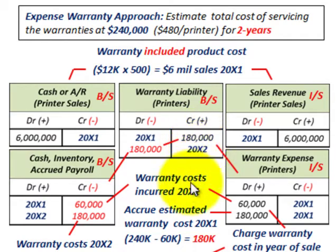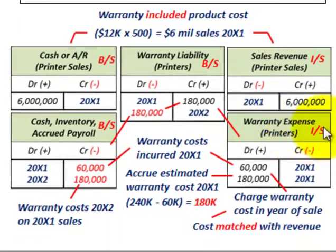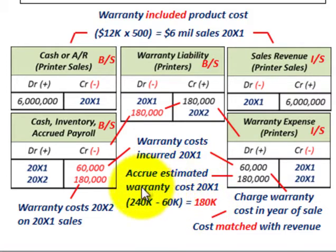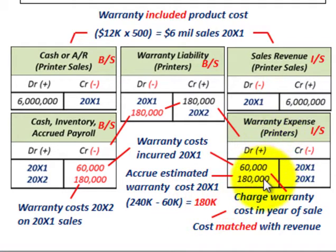Now we deal with warranty expense on these printers. Costs actually incurred in 20x1 were $60,000, so we debit warranty expense on the income statement for $60,000. We also have to accrue the remaining estimated warranty costs: total estimated cost was $240,000 minus $60,000 incurred equals $180,000. So we recognize the total warranty expense in 20x1 as $60,000 actual plus $180,000 accrued, charging off the total warranty cost in the year of the sale.